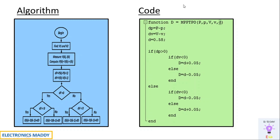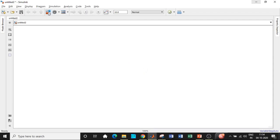So this is the code we have to write. The build process goes: first design the PV array, then the boost converter, then write the MATLAB function code, interface it with the boost converter, and check the output. Let's go to MATLAB and start the simulation.